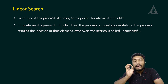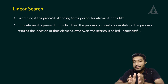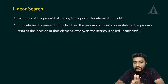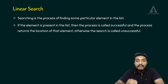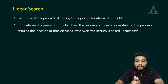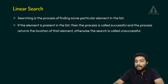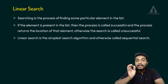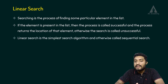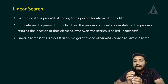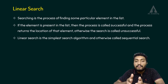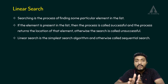Now, if the process is successful, the element is found and its location is returned by the searching program. If the search is unsuccessful, the element is not found. Linear search is the simplest search algorithm, and it can also be called sequential search.